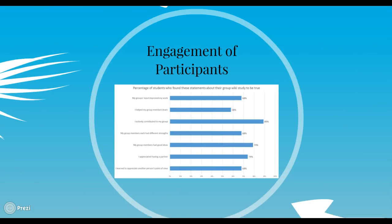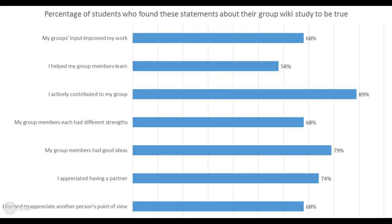Next, I looked at student engagement in the treatments. I had seven questions designed to measure student engagement, and in every one the wiki study came out on top. 68% believed that their group's input improved their work. 58% said their group members helped them learn. 89% said that they contributed actively to their group.